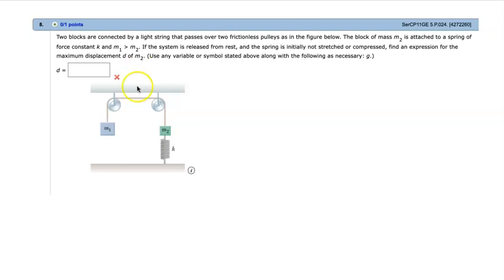So the block of mass M2 is attached to a spring of force constant K, and mass 1 is greater than mass 2. If the system is released from rest, and the spring is initially not stretched or compressed, so we know that kinetic energy is zero and the spring potential energy is zero, find an expression for the maximum displacement D of M2.